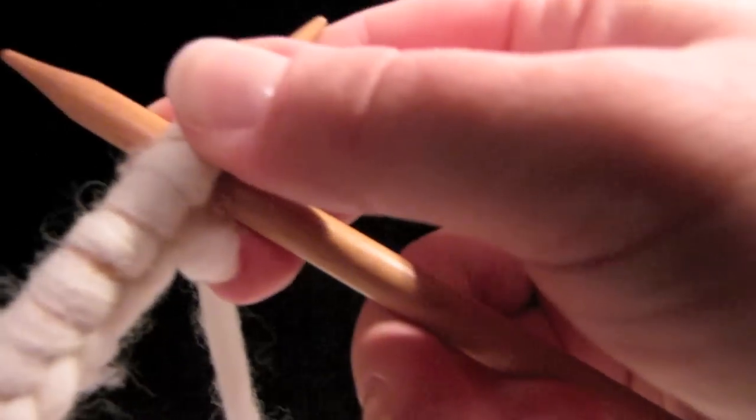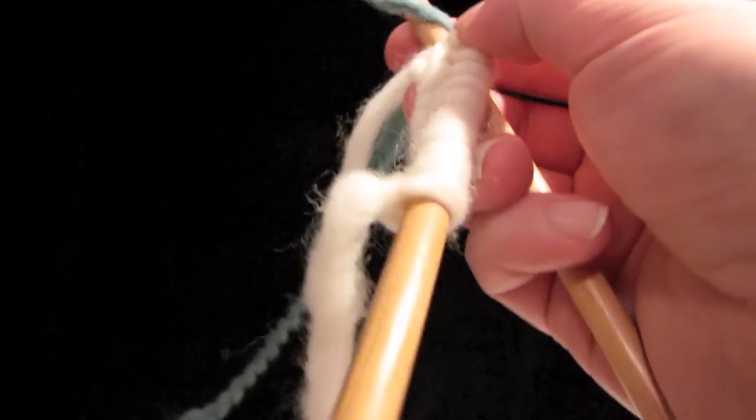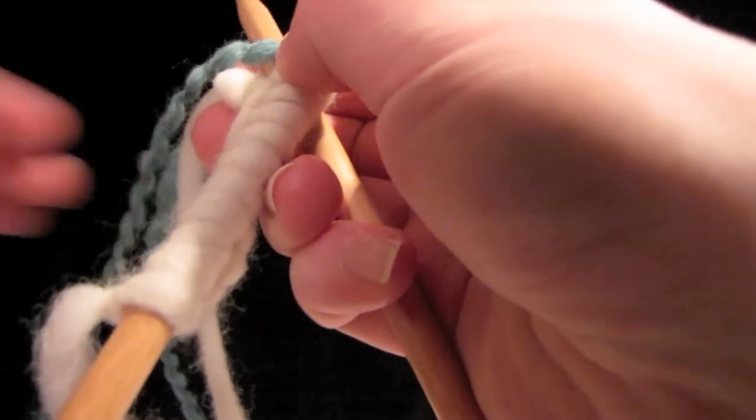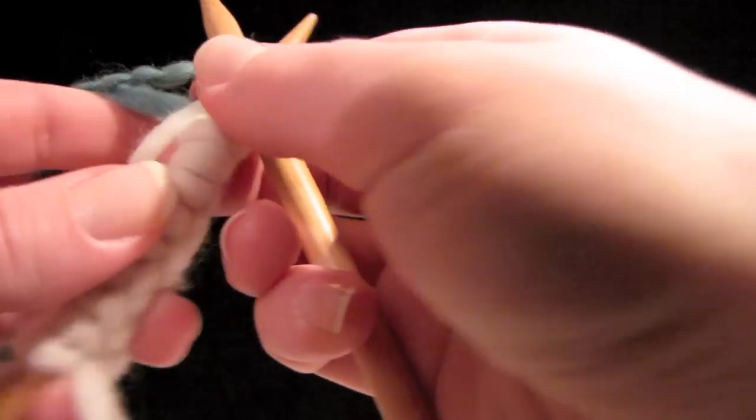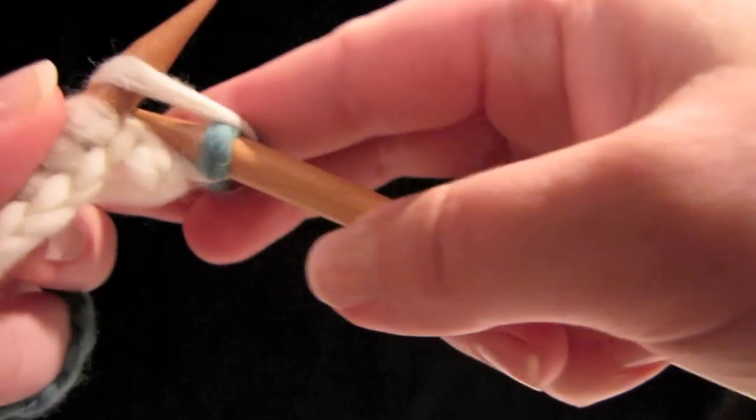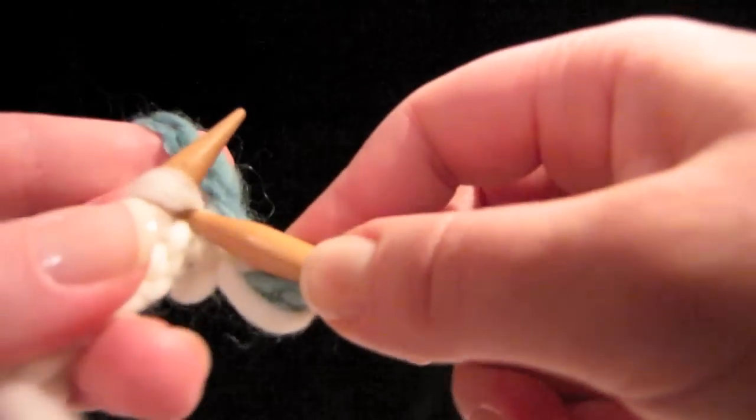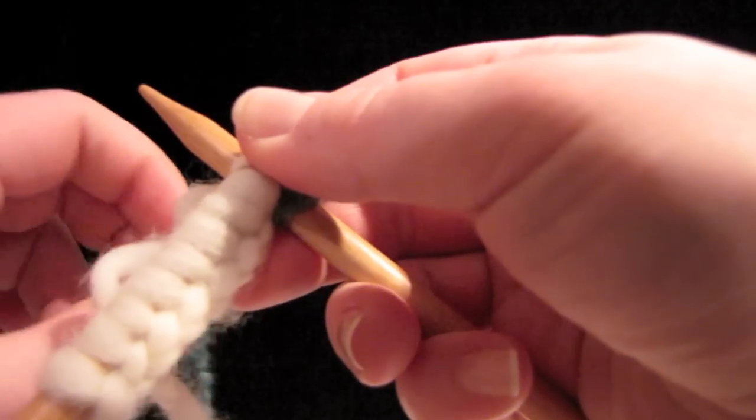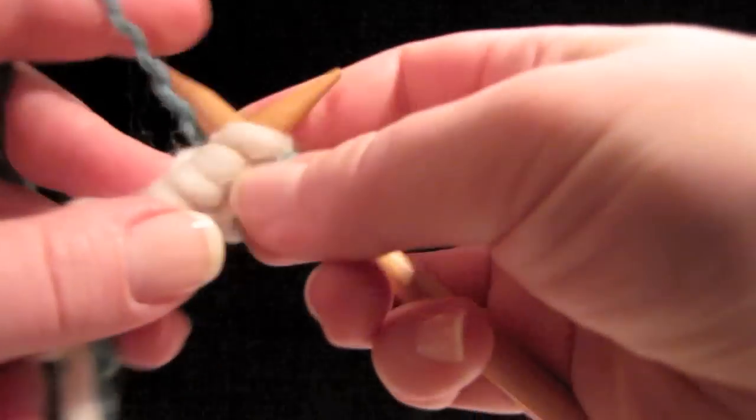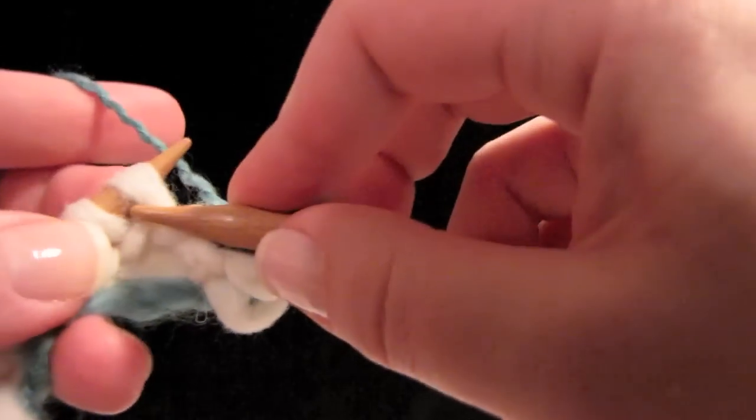I've got some turquoise yarn. You can just start it by leaving a tail like that, hanging down and pulling a loop through to begin. And we're knitting with the new yarn.